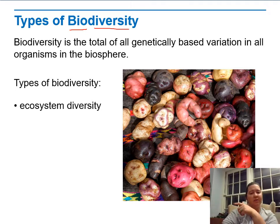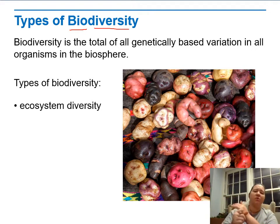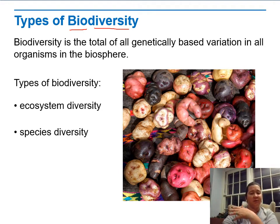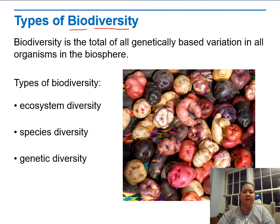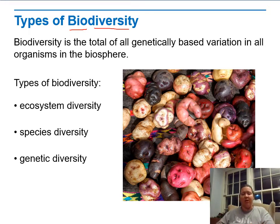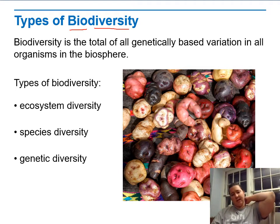There are a few different types of biodiversity. Ecosystem diversity is just the diversity of all the different ecosystems — all the different biomes, wetlands, different ocean biomes, different land biomes. Species diversity is all the different species that there are. And then genetic diversity goes down to the actual genetic level, looking at the diversity for all the different organisms out there.